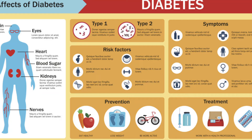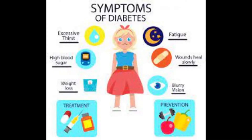If you have these autoantibodies, you have an increased risk of developing type 1 diabetes, but not everyone who has these autoantibodies develops diabetes. Race or ethnicity may also raise your risk of developing type 2 diabetes, though it's unclear why certain people — including Black, Hispanic, American Indian, and Asian American people — are at higher risk.